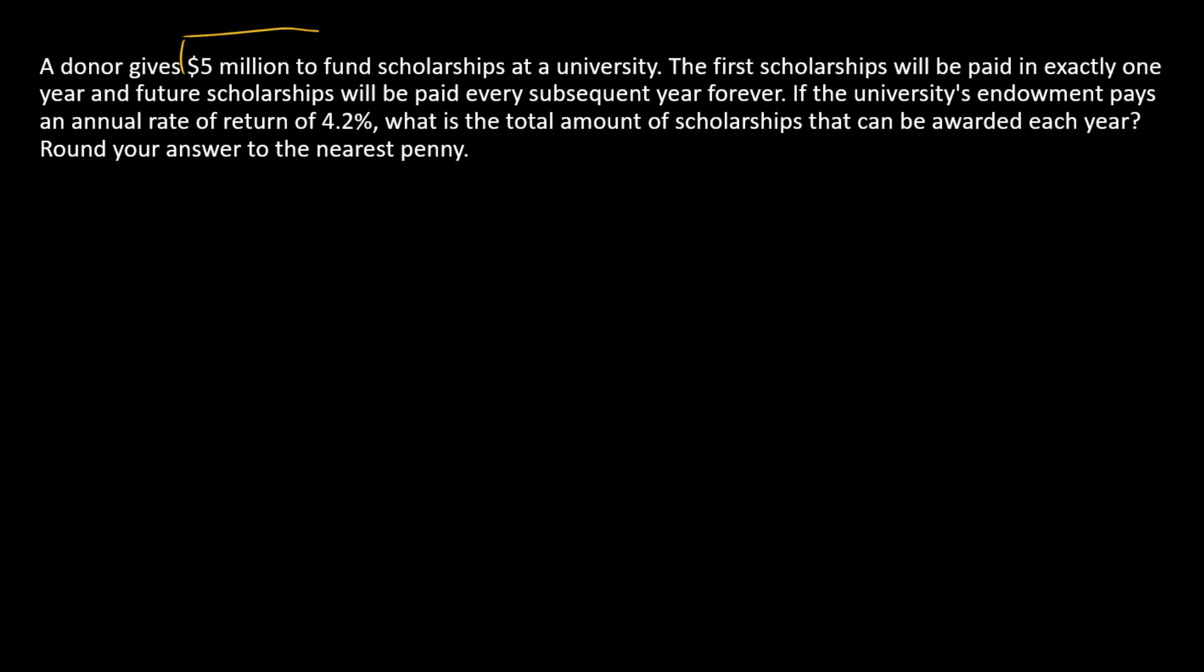Now in this problem we have a cash amount today, so think of that as a present value at time zero. In this problem, the donor is going to give this money to the university, and the university is going to turn back and give out annual scholarships of the same amount each year forever. So what's the university giving its students? A perpetuity.